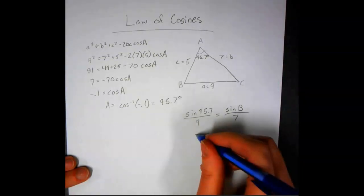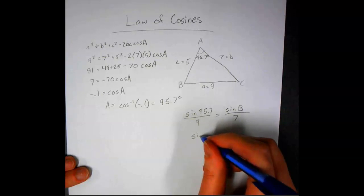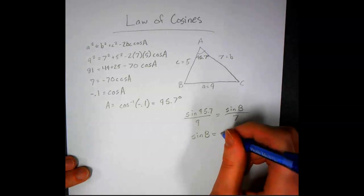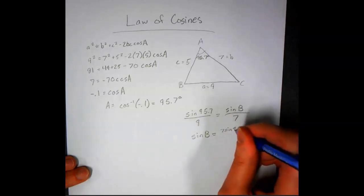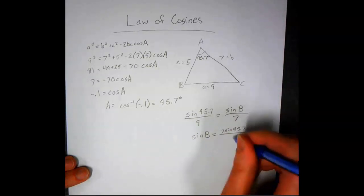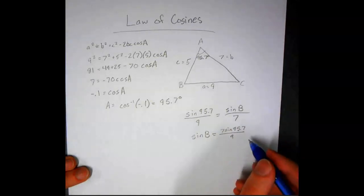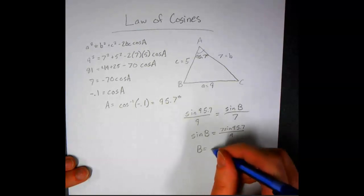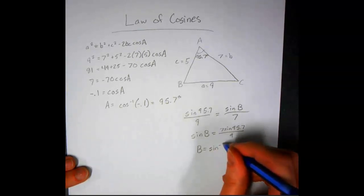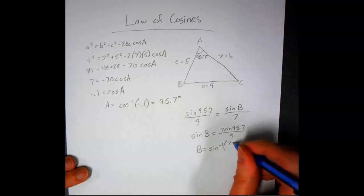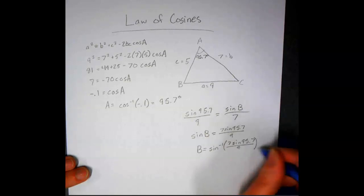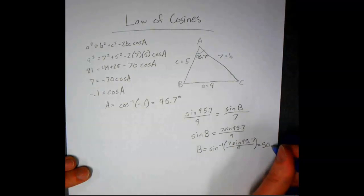We're going to do our cross multiplication, and then get sine b by itself. We'll have 7 sine 95.7 over 9. When we plug this into the calculator, then we'll need to say b is the inverse sine of what we have, and that's going to equal just about 50.7 degrees.